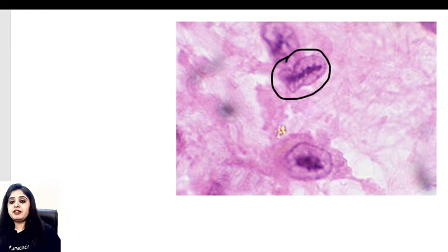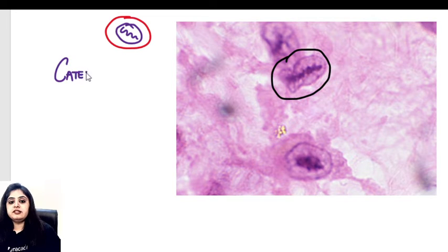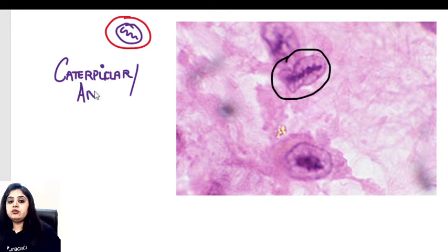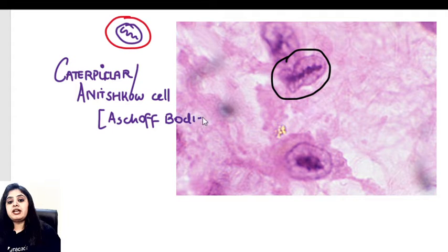When we talk about this cell, there's a nucleus inside it with chromatin that looks like a caterpillar — so this is definitely a caterpillar cell. The fancy name for it is an Anitschkow cell. Caterpillar cells or Anitschkow cells are seen in Aschoff bodies, meaning we're talking about a case of rheumatic endocarditis or rheumatic heart disease.